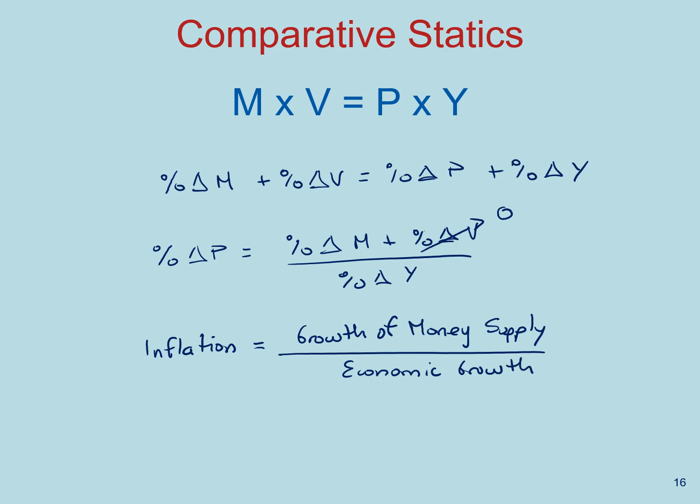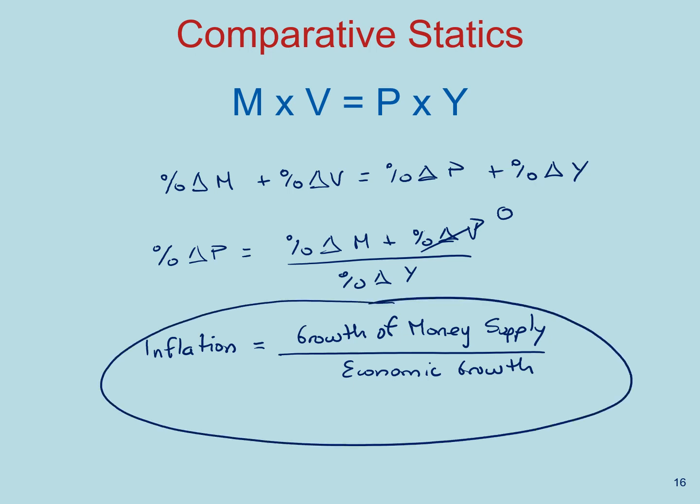If we assume there is no economic growth, then we can clearly see that inflation equals the growth of the money supply. So if the Fed were to increase the money stock, that would mean we get inflation. This equation is incredibly important to our understanding of the relationship between the money supply and inflation, and it shows the basic result we obtained using the money supply and demand diagram.